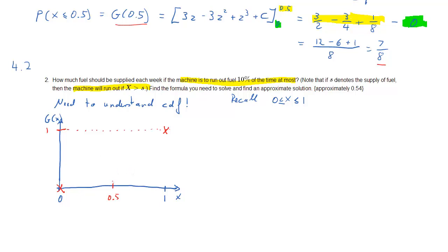So somewhere in between, let's see, we previously calculated that g of 0.5 was 7 eighths. So it will be here, and the CDF altogether will look something like that. That cross should be on the line.